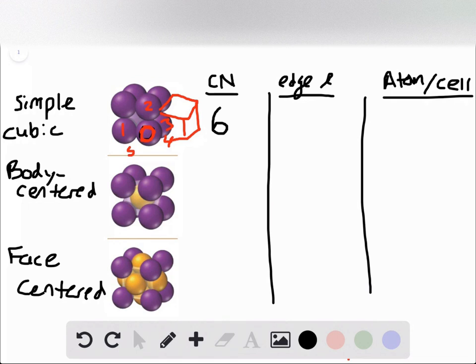Next, for the body-centered cell, if we consider just this yellow atom in the center, it's a little bit easier to see that the coordination number around this is going to be eight, because the number of atoms immediately touching the one in the center are the ones that make up the corners of this cell.